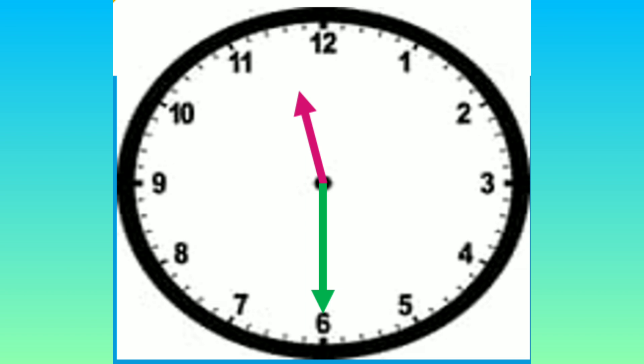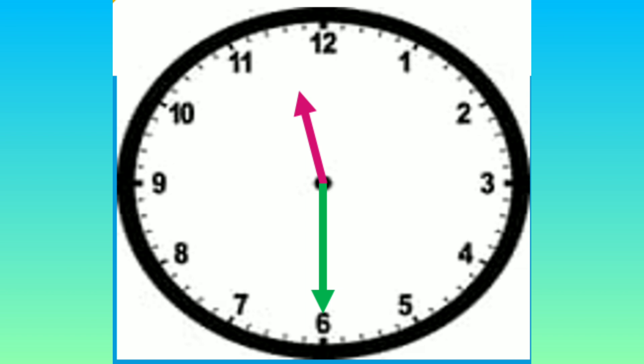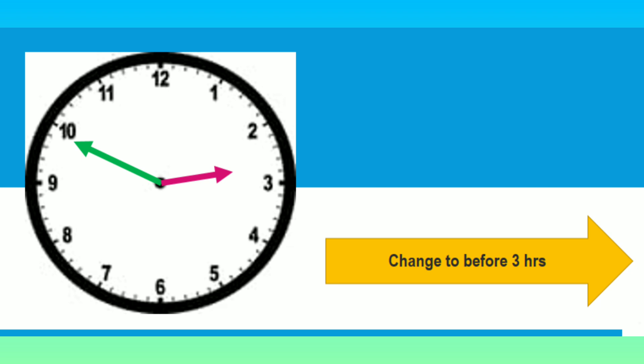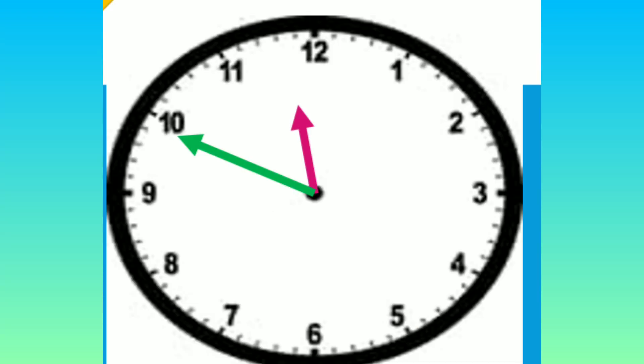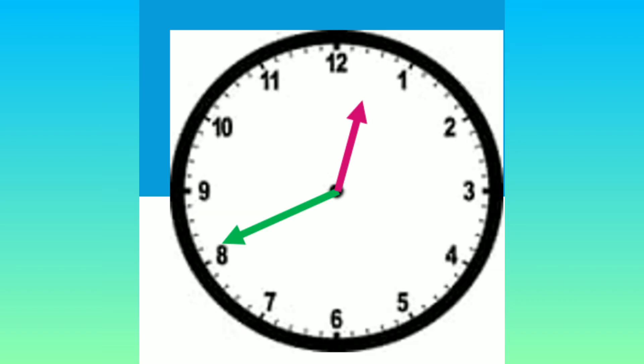Next example — look at the clock. What time is it? Yes, two fifty — two hours fifty minutes. If you change to three hours before the time, the time will be eleven hours fifty minutes.